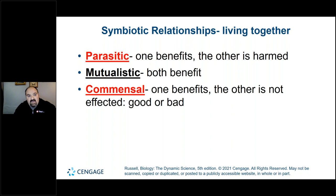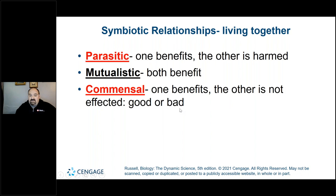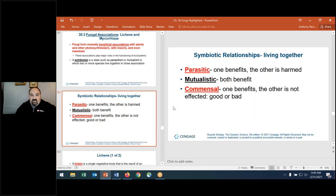Symbiotic relationships means organisms living together. Parasitic: only one is benefiting. Mutualistic: both are benefiting — when you think of a symbiotic relationship, you're thinking primarily of a mutualistic relationship. Commensalism: one is benefiting and the other is not really affected, good or bad. Remember those terms.